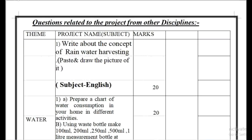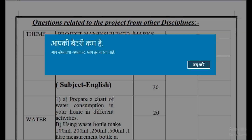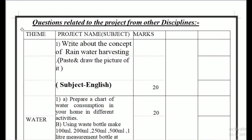This is the body of the project with questions from different disciplines. Every subject has 20 marks. For English, the question is: write about the concept of rainwater harvesting and paste or draw a picture of it. First define what rainwater harvesting means, then explain it on the next page, and on the following page paste or draw a picture. Mention the subject heading 'English' at the top of the first page.